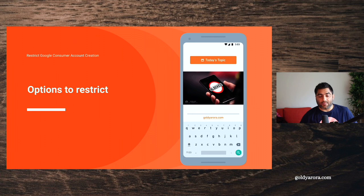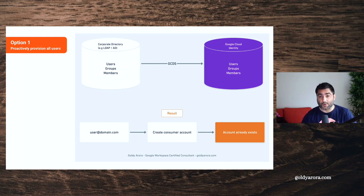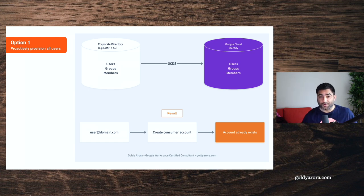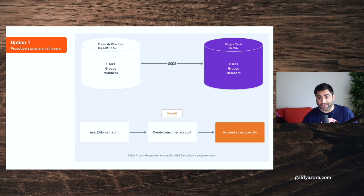Now let's talk about options to restrict it. There are essentially two options. The first option is that you pre-provision or proactively provision all your company employees into Google work accounts — either Google Workspace or Google Cloud Identity. This means if you have 2,000 people, you create work accounts for all of them, so when anyone tries to sign up for a consumer account, they'll see an error saying this account already exists in Google.